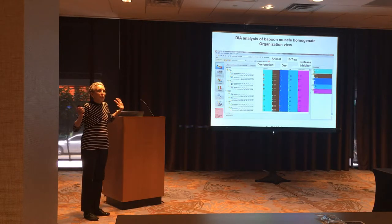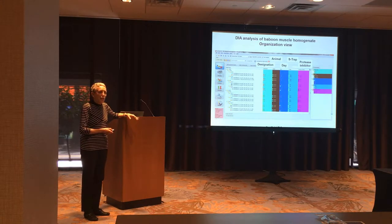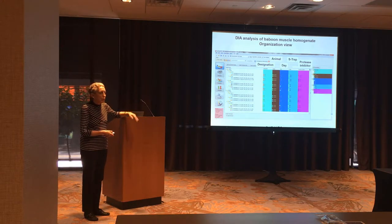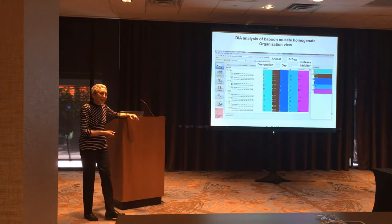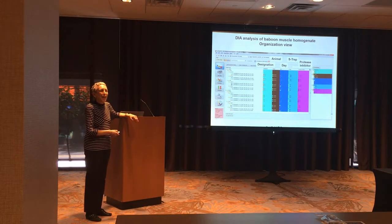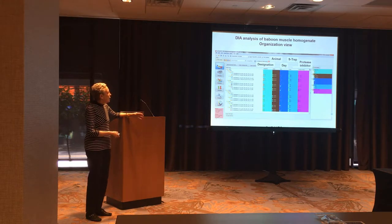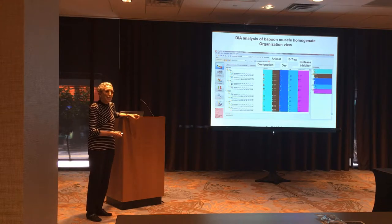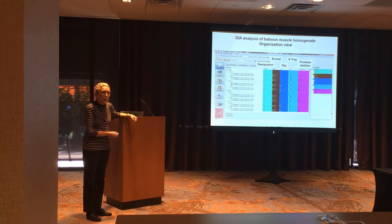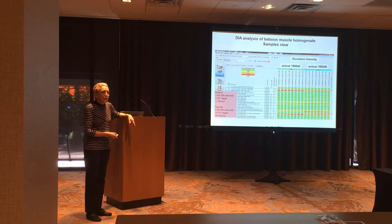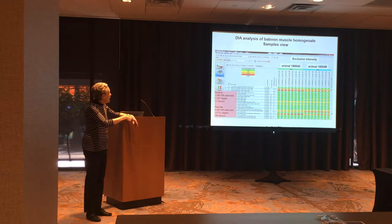The organization view is astounding to me because now you can really explore your data and ask many different questions. For this experiment, we had the designation M and BL. The investigator said M was muscle and BL was something — they're both muscle. We have the different animal, the different S-trap, plus or minus protease inhibitor, and it's very easy to do the subsequent evaluation. I'm excited that the new version is out to make it more facile to enter these categories — you can put them in later, you don't put them in at the beginning. You just enter your sample designations.